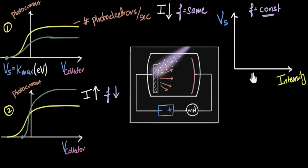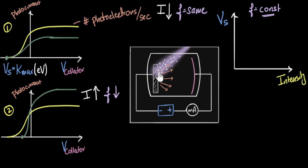We are changing the intensity while keeping the frequency the same — making it brighter. The question is: what happens to the stopping voltage? In other words, what happens to the maximum kinetic energy of the electrons? As I increase the intensity, I'm increasing the number of photons, but the energy of each photon stays the same, because the frequency is constant — Planck's equation, E equals HF. Therefore, the energy of the electrons coming out stays the same. So if I change the intensity, the stopping voltage will not change.